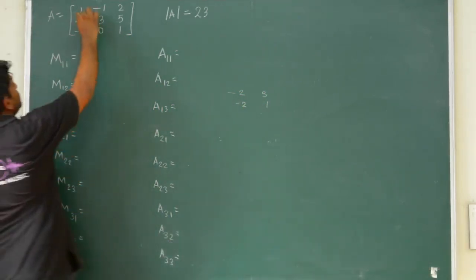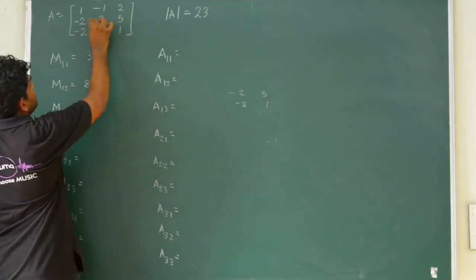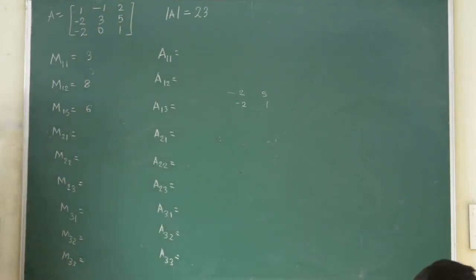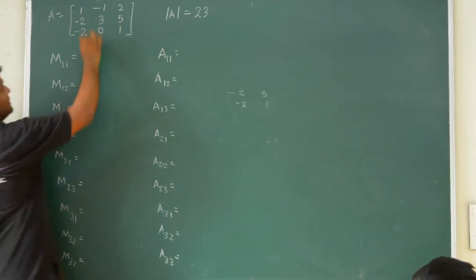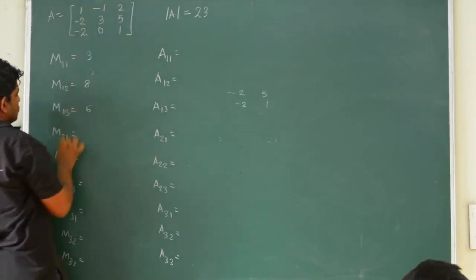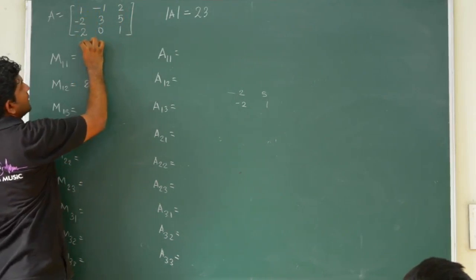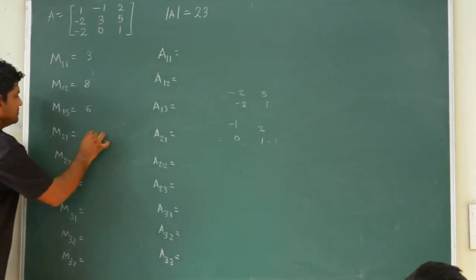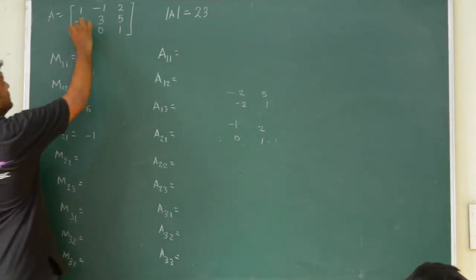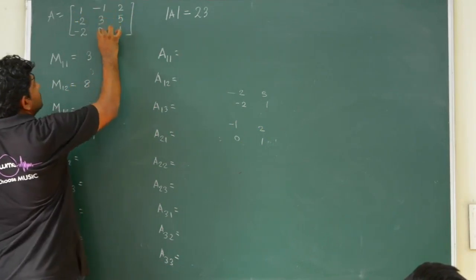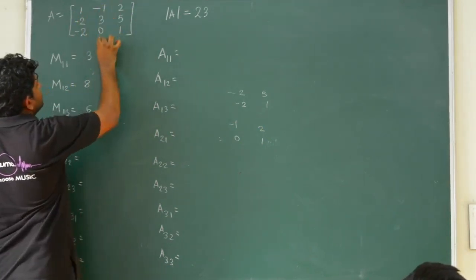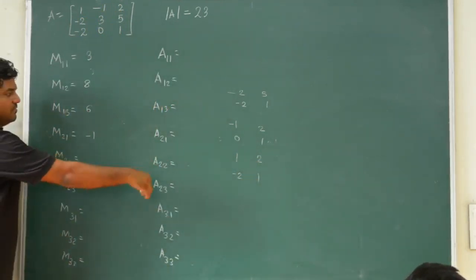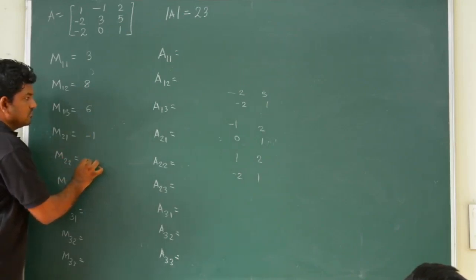For M13, hide the first row and third column. The remaining elements are minus 2, 3, minus 2, 0, giving a value of 0 minus (minus 6) equals 6. For M21, hide the second row and first column. The remaining elements are minus 1, 2, 0, 1, giving a determinant value of minus 1. For M22, hide the second row and second column. Elements are 1, 2, minus 2, 1, giving a value of 1 minus (minus 4) equals 5.